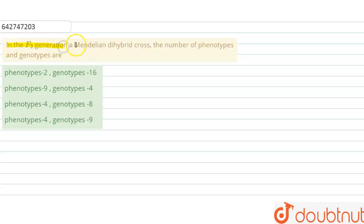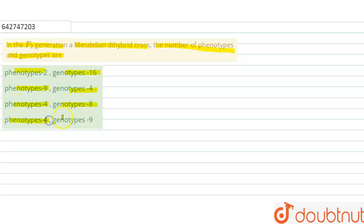The question is: in the F2 generation of a Mendelian dihybrid cross, the number of phenotypes and genotypes are — options are: phenotypes 2, phenotypes 16, phenotypes 9 with genotypes 4, genotypes 4 and genotypes 8, and the last is phenotypes 4 and genotypes 9. We are talking about the F2 generation of the Mendelian dihybrid cross.